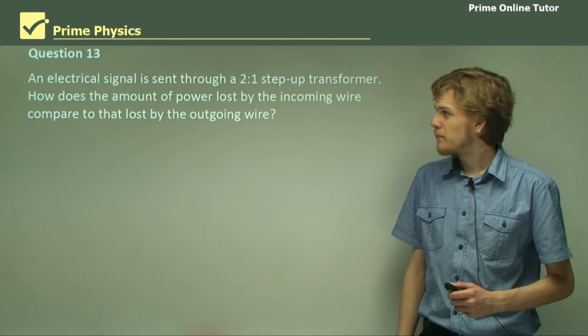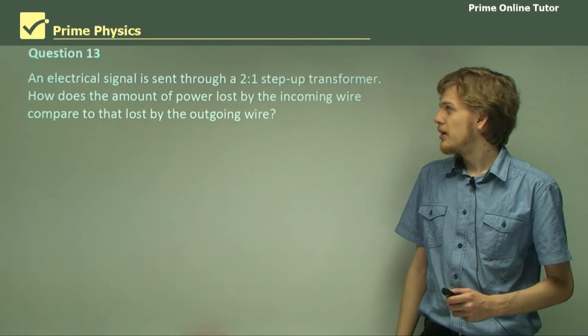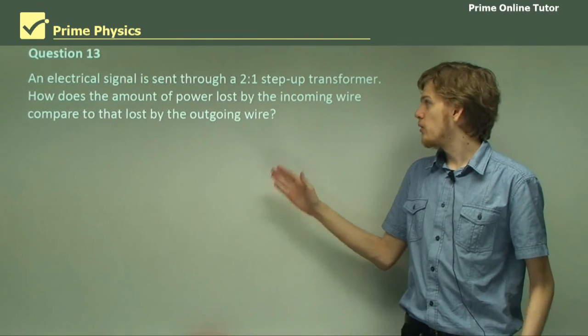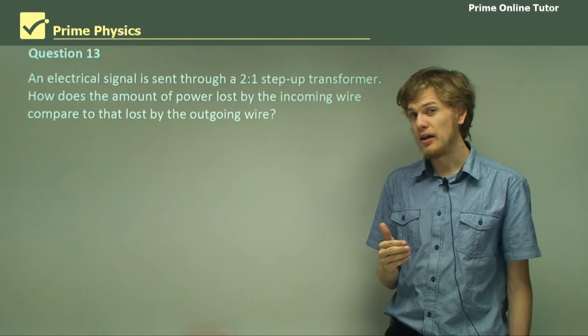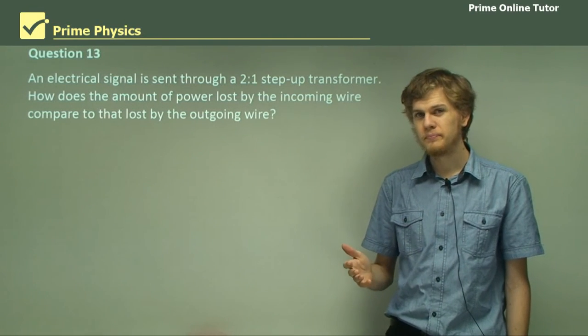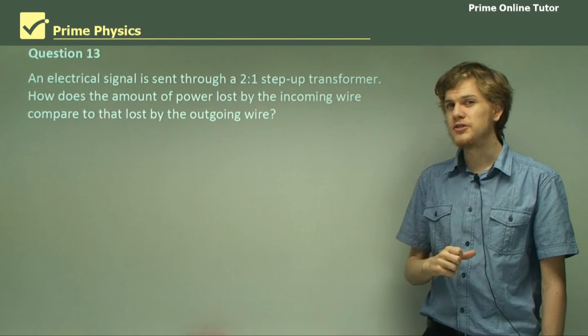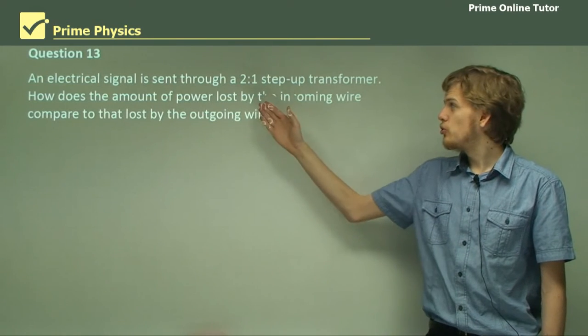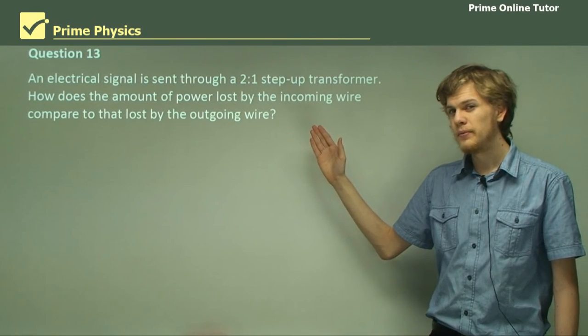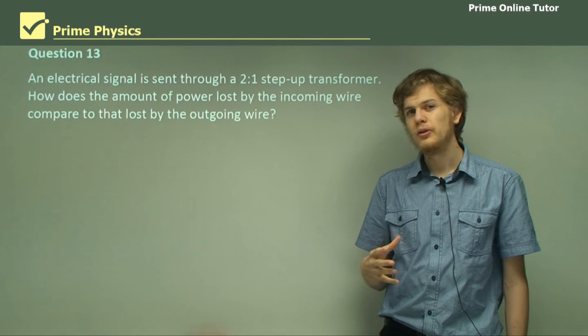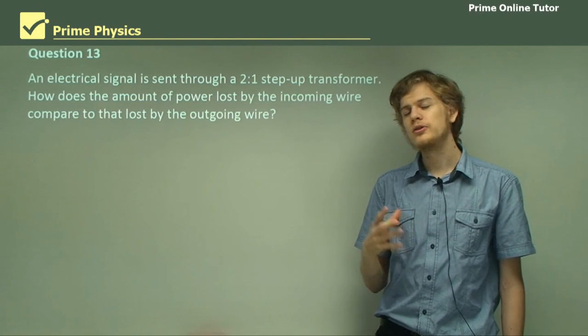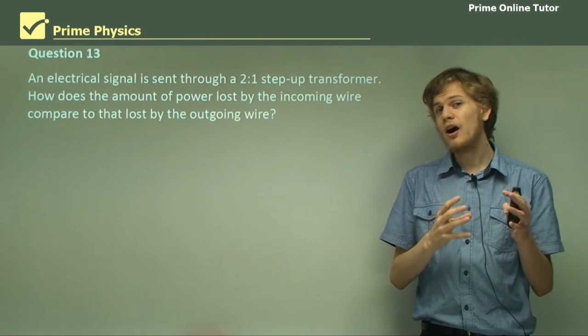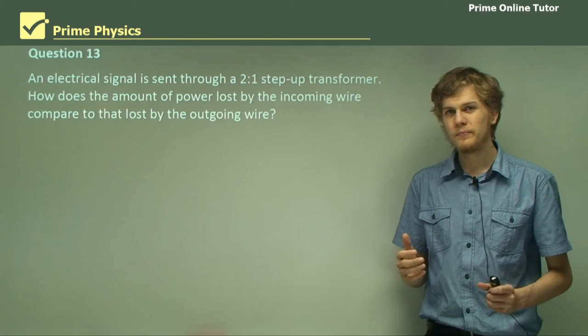Question 13. An electrical signal is sent through a 2 to 1 step-up transformer. How does the amount of power lost by the incoming wire compare to that lost by the outgoing wire? We can assume that both wires have the same resistance. So if we have a 2 to 1 step-up transformer, that means that the voltage in the secondary coil is twice as great as the voltage in the primary coil. But that means that the current is only half as much as in the primary coil.